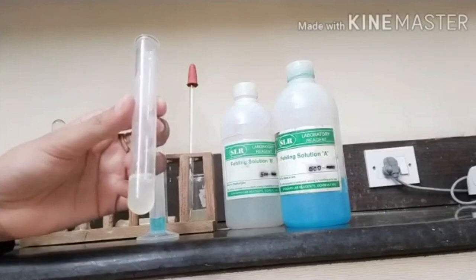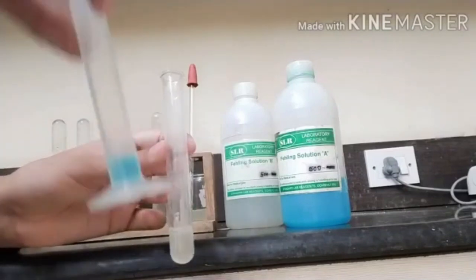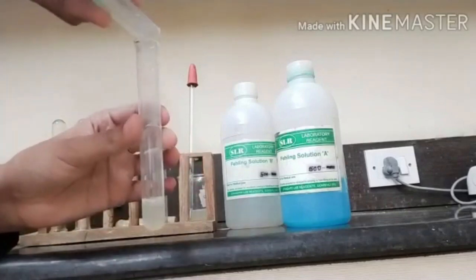After adding unknown sample, we have to add 1 ml of Fehling A solution and pour into the test tube.